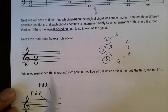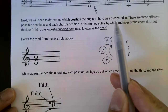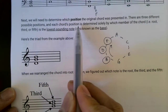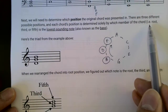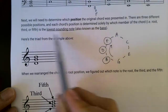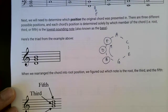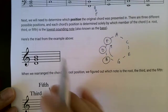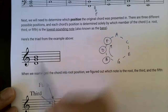We need to determine which position the original chord was presented in. There are three different possible positions. Each chord's position is determined solely by which member of the chord — for example, root, third, or fifth — is the lowest sounding note, also known as the bass. I will interchangeably use either 'lowest sounding note' or 'bass'; that only means whatever is in the bottommost position.